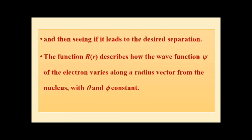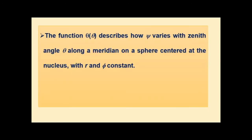If it leads to the desired separation, we can verify later if it leads to the correct result. The function capital R of r describes how the wave function of the electron varies along the radius vector from the nucleus, with theta and phi held as constants. Only the variation of the wave function along the radius vector is taken care of by the function capital R; theta and phi are constants for this function.